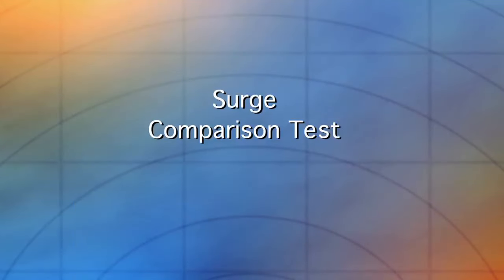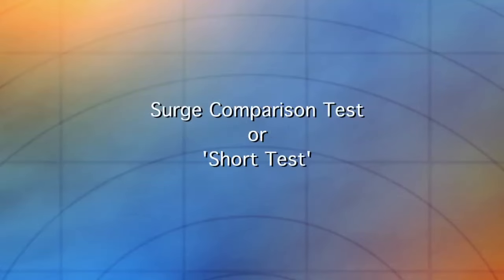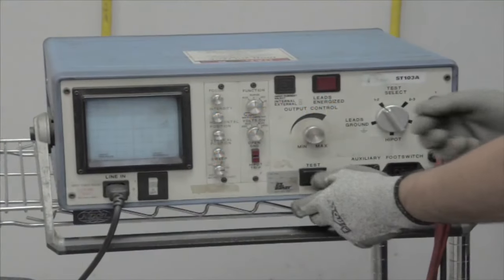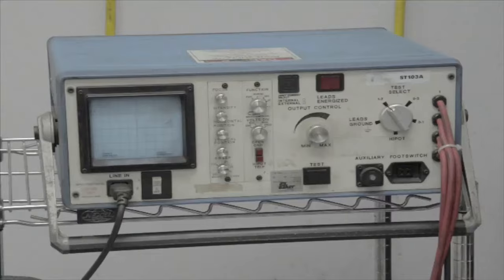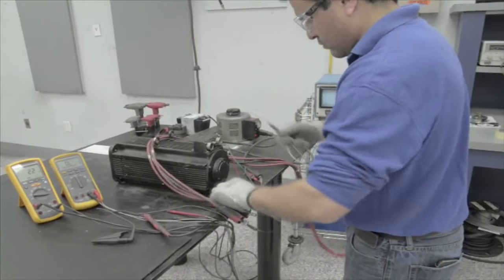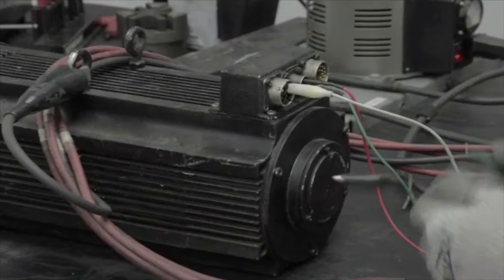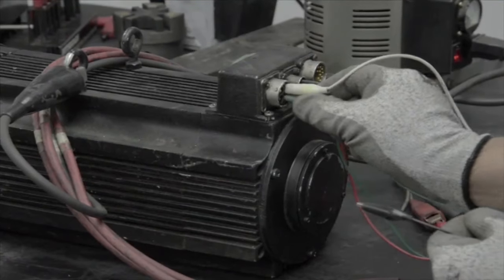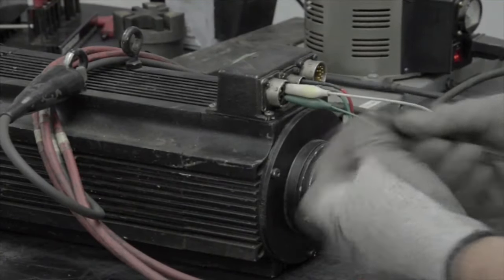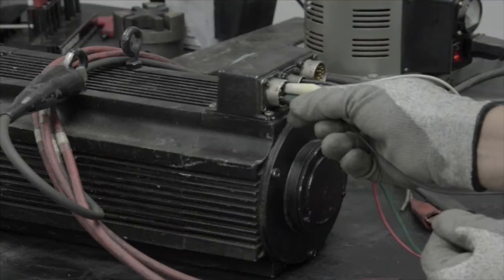The next step is for the technician to perform a surge comparison test or short test. He is using a surge tester to verify whether or not the stator will need a rewind, first connecting the ground to the motor and then connecting three leads to each phase of the motor. The surge test checks the strength of insulation and for any shorts, turn to turn, layer to layer, or phase to phase.